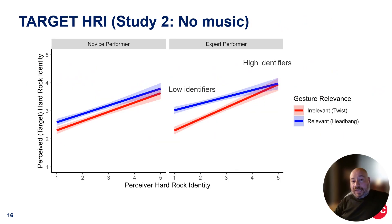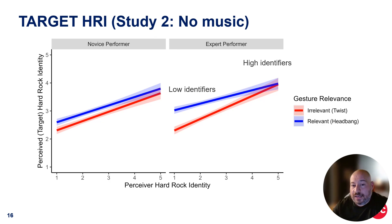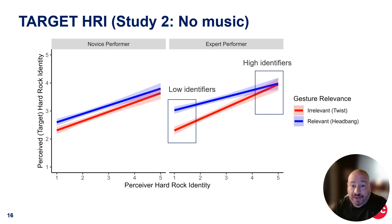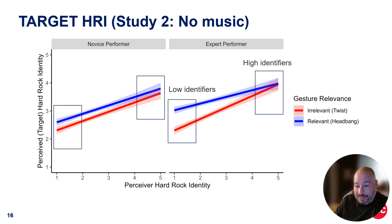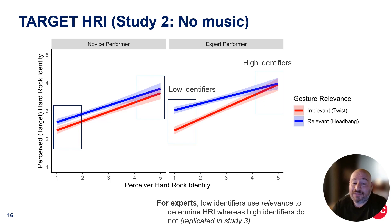First and most importantly, in just viewing the gestures, you can clearly see the hard rock identity effect. Low identifiers are less likely to perceive them as hard rock, and high identifiers do. There's an interaction for expert performers: when you're a high identifier perceiving an expert, it doesn't matter which gesture they're moving — they just perceive them as an expert. But when novices perceive the expert, they're actually looking at Zach and saying: when he's headbanging, he clearly looks like a rocker; when he's just twisting, he doesn't really look like a rocker. Whereas for the novice performer, we see a much more balanced main effect with no interaction. So for experts, low identifiers use relevance to determine hard rock identity, where high identifiers really do not — it seems like they're just relying on expertise or something else.